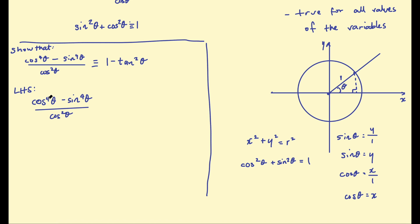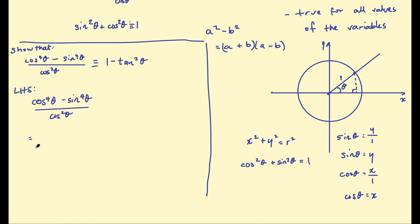Look at the different parts of the problem and what makes it complicated. This cosine to the power of 4 and sine to the power of 4 — that's the messiest part of the expression. We want to get rid of those powers of 4, and here your algebraic identities come in handy. We know that a squared minus b squared — the difference of two squares — can be written as (a plus b)(a minus b). So cosine to the power of 4 can be written as cosine squared theta, all squared, minus sine squared theta, all squared.